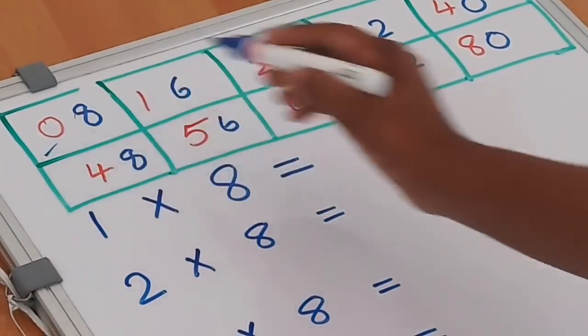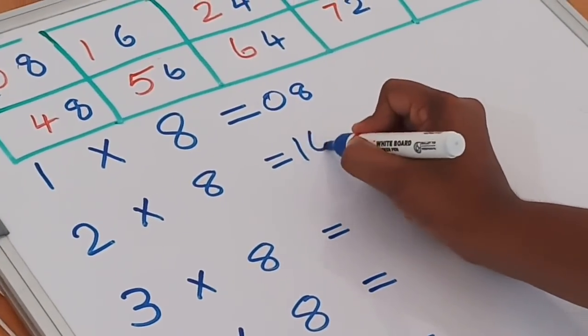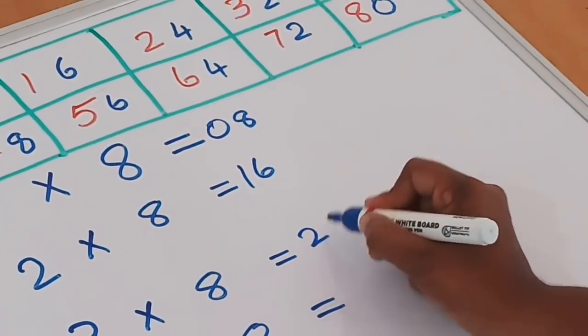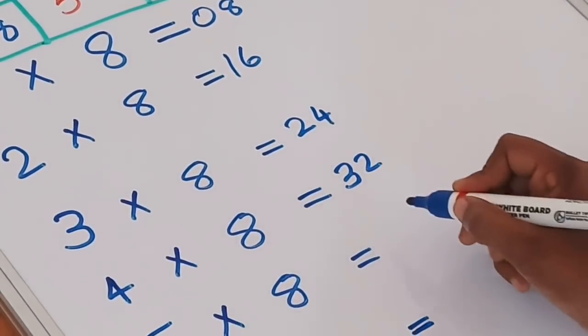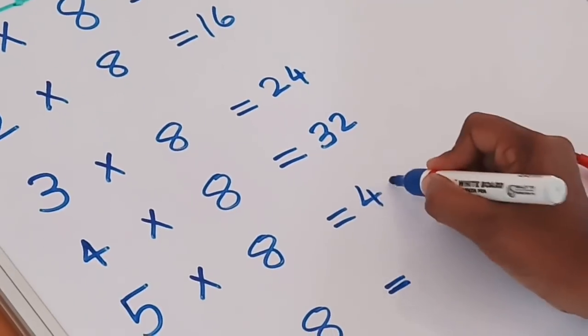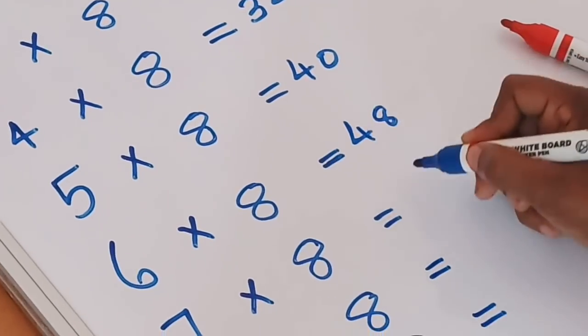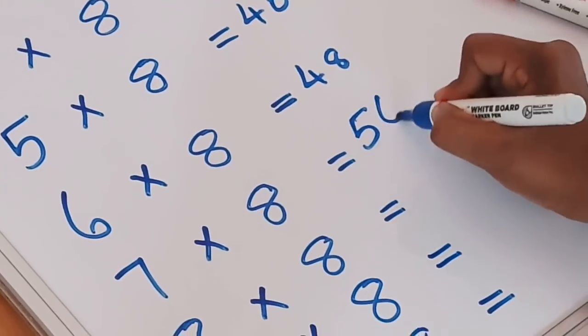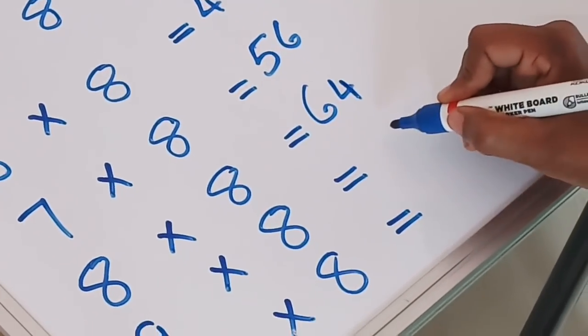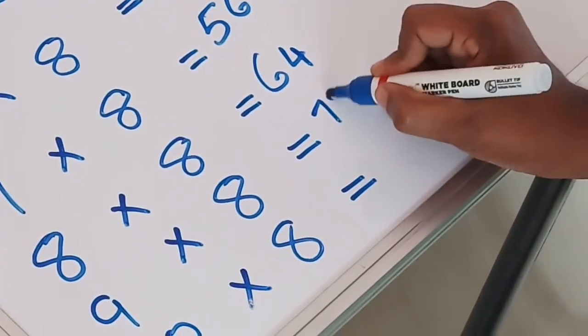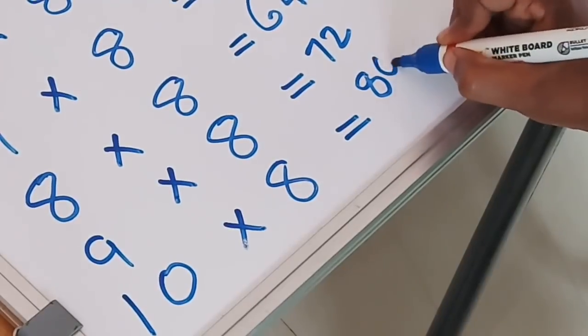1 times 8 equals 8, 2 times 8 equals 16, 3 times 8 equals 24, 4 times 8 equals 32, 5 times 8 equals 40, 6 times 8 equals 48, 7 times 8 equals 56, 8 times 8 equals 64, 9 times 8 equals 72, 10 times 8 equals 80.